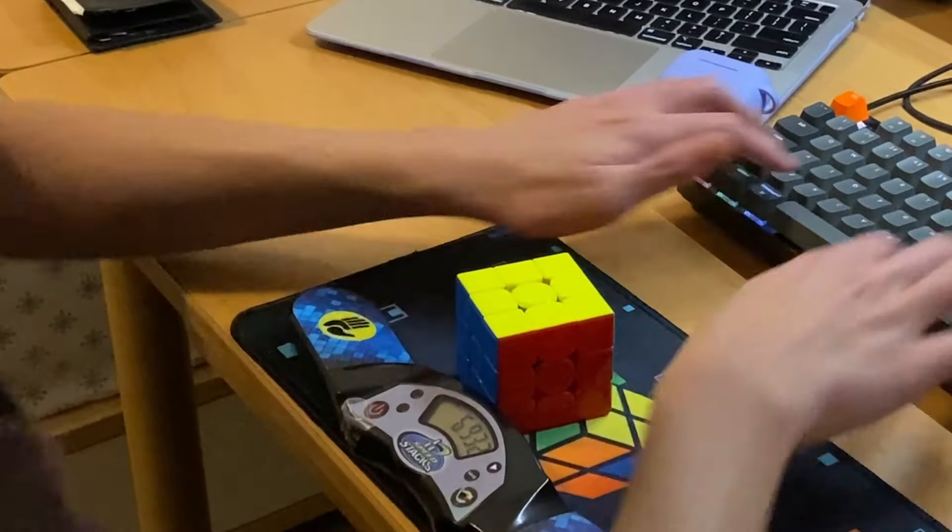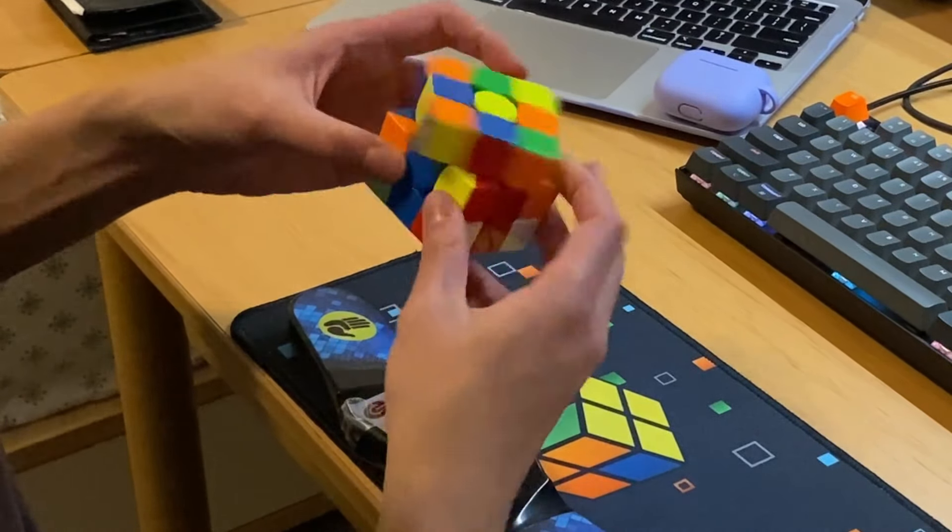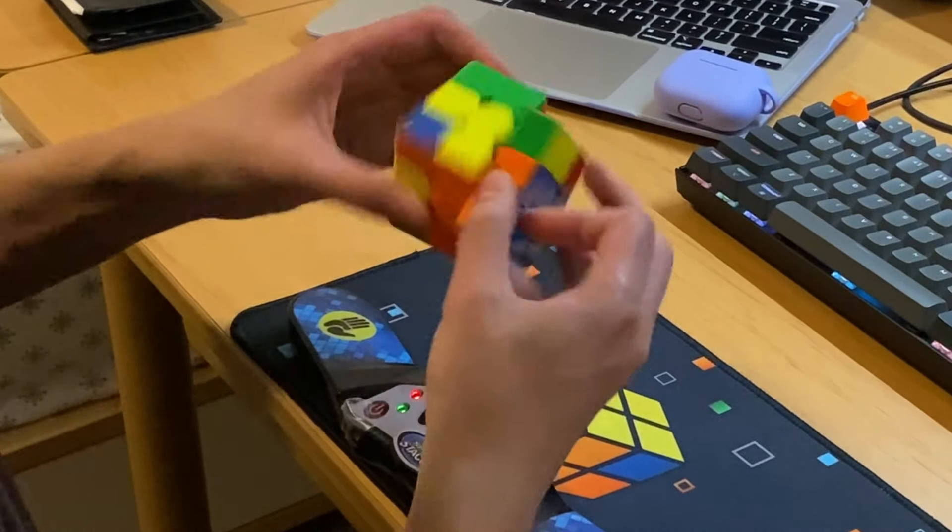And not only can it be made slower, but I think it also works well with a slower turning speed. Not all cubes really are like that. For example, the Super Weilong.